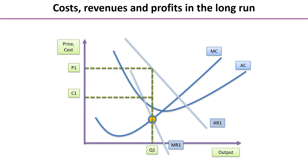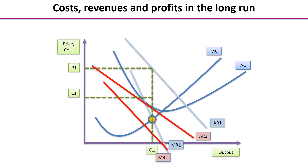We've faded out the original average revenue and marginal revenue curves so we can add in new ones to highlight what should be happening. Here are the new average and marginal revenue curves — AR2 and MR2. As you can see, they've shifted inwards towards the origin, because as each firm loses market share it has to reduce the price it charges. With the new marginal revenue curve, the profit-maximising position has changed: where MR2 equals MC has moved, resulting in a lower quantity being sold by each firm.